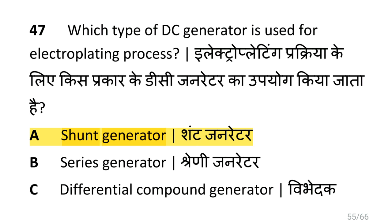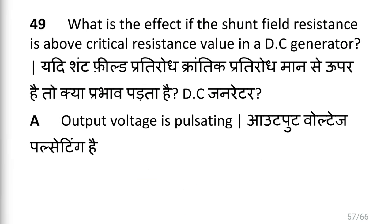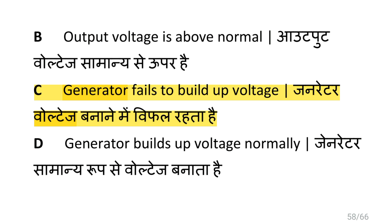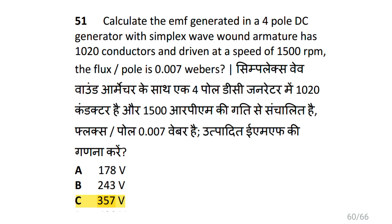Which type of DC generator is used for electroplating process? That is shunt generator. What is the purpose of compensating winding in DC generator? That is to neutralize the demagnetizing effect. What is the effect if the shunt field resistance is above critical resistance value in a DC generator? The generator fails to build up voltage. What is the effect of armature reaction in DC generator? That is output voltage decreases. Calculate the EMF generated in a 4-pole DC generator with simplex wave wound armature having 1020 conductors, driven at a speed of 1500 RPM, with flux per pole of 0.007 Webers.